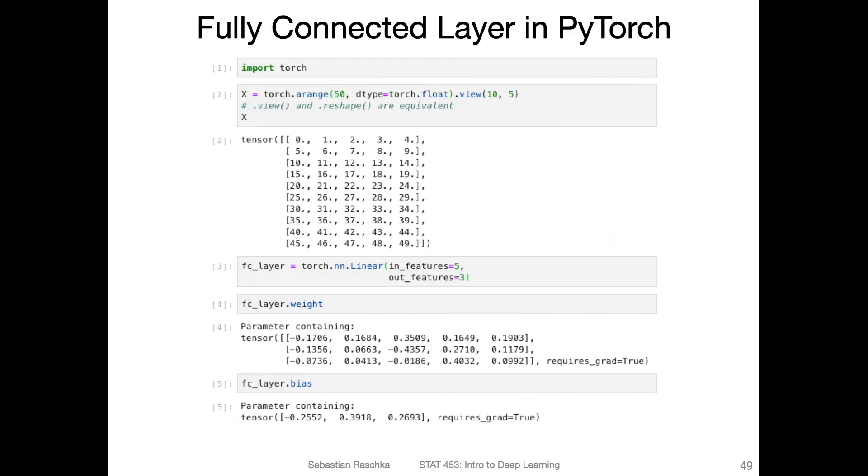How we implement a fully connected layer in PyTorch is very simple. There's actually a function called torch.nn.linear. Let's start with the dataset here. Let's assume I'm creating some random data, but assume this is some valid training data with dimensionality 10 times 5 input matrix.